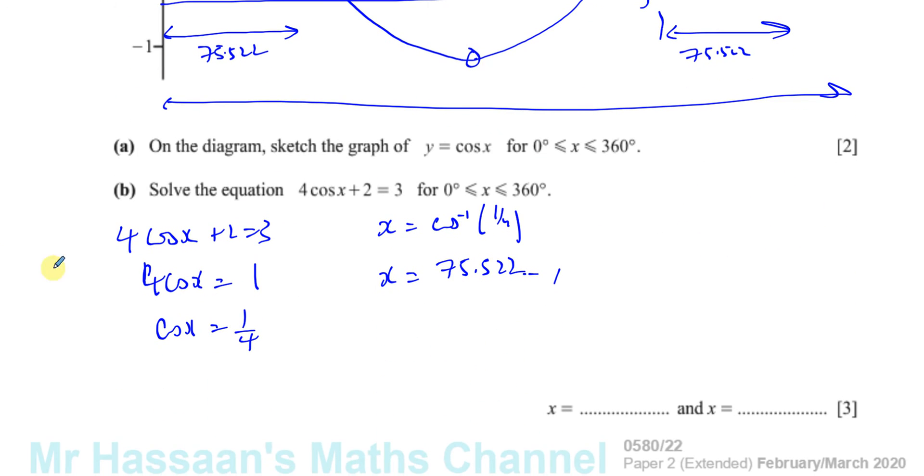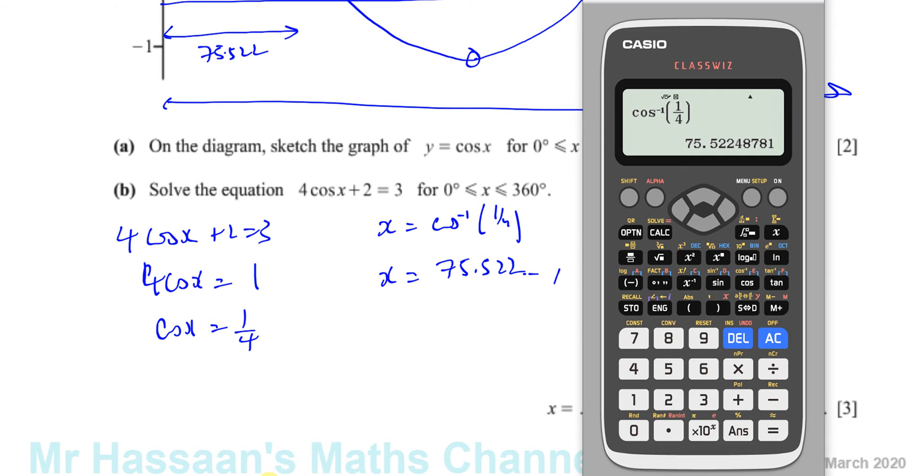So we take 360° minus our last answer. So we've got 360° minus 75.522°, and that should give us the correct answer. So 360° minus this answer.